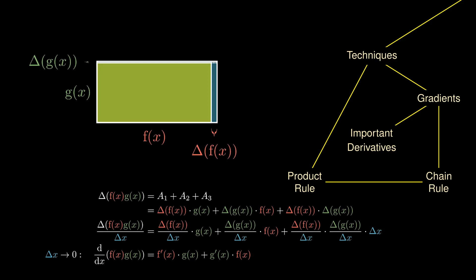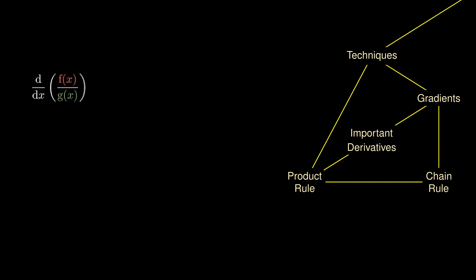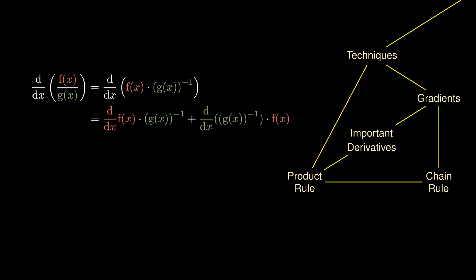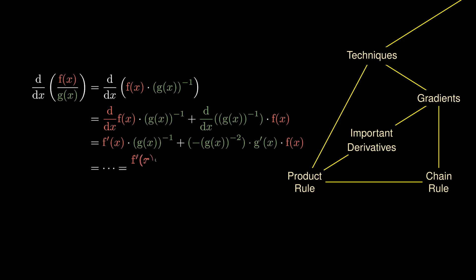The product rule and the chain rule together help us calculate the derivative of the quotient of two functions. We rephrase division by g as multiplication by g to the power of negative 1, allowing us to write the quotient as a product of two functions. Applying the product rule, the derivative of the first function times the second plus the derivative of the second times the first, and using the chain rule on the second term, as an exercise you can show that the algebra simplifies to the quotient rule formula.